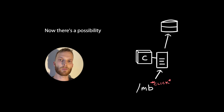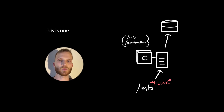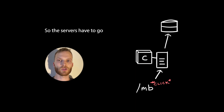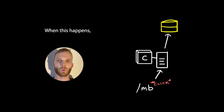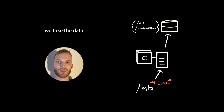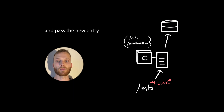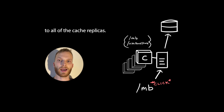There's a possibility of a cache miss happening. This is when the data requested isn't in the cache, so the servers have to go look in a database. When this happens, we take the data retrieved from the database, use it to update the cache, and pass the new entry to all of the cache replicas.